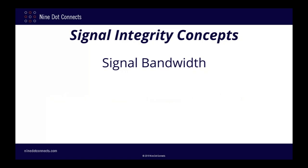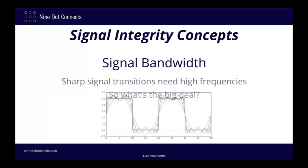So what does it mean to talk about the bandwidth of a transition and why do we have to worry about it at all? In order to have a sharp signal transition, you need to have high frequency components to the signal. If you lose these higher frequency components, your signal no longer has a sharp edge. Conversely, if we know what transition speed we can get away with, we can disregard the higher frequencies needed for these sharper signals, thus getting rid of a host of signal integrity problems associated with the unnecessary high frequencies.